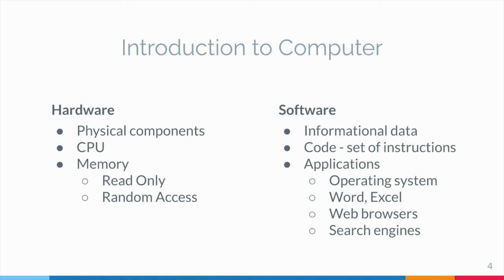Hardware is what a computer is physically made up of, which includes the monitor, keyboard, and mouse, and all of its internal components which allow it to store, receive, and process information and data.